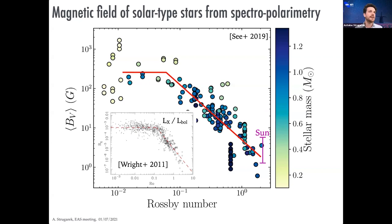This is reminiscent of what we observe also in X-ray luminosity divided by the bolometric luminosity of the star — when you plot it as a function of Rossby number you see the same kind of decreasing trend with Rossby number and the saturated regime at very low Rossby numbers.